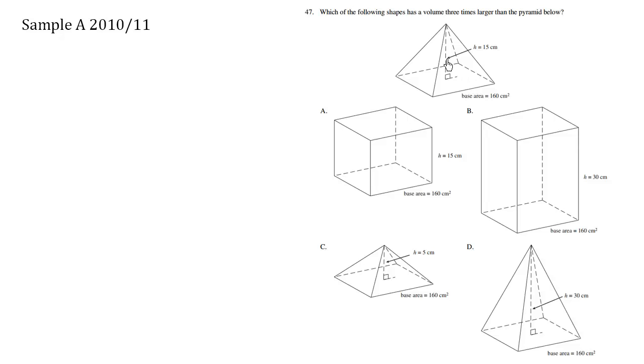So we know that the volume, and you should memorize that the volume given the same base area of a pyramid as compared to a rectangular prism, the rectangular prism is going to have triple the volume given the same height.